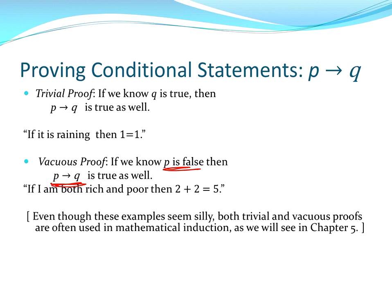So even though these seem silly, they are both important because they are useful in certain other types of proofs, specifically mathematical induction, which we cover in a separate course. All right, so the two special types, trivial proof and vacuous proof, the next type is going to be called the direct proof.